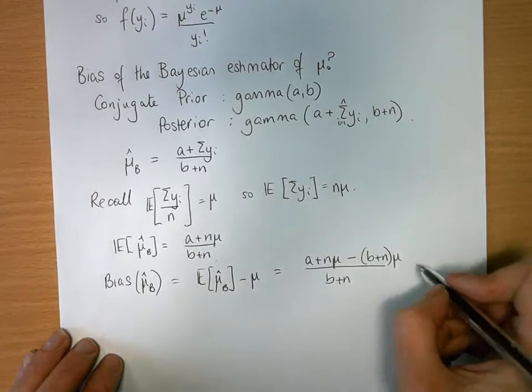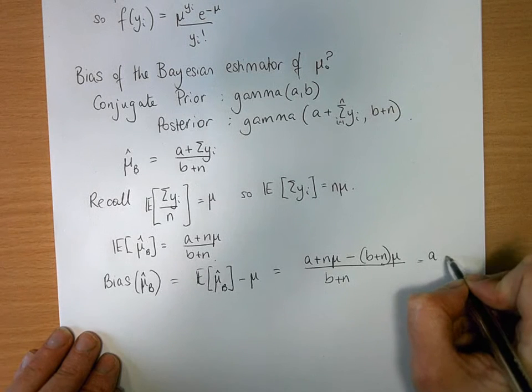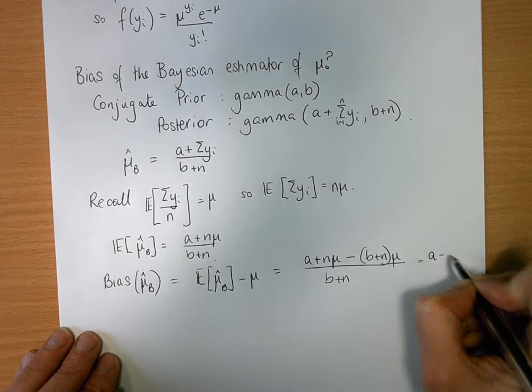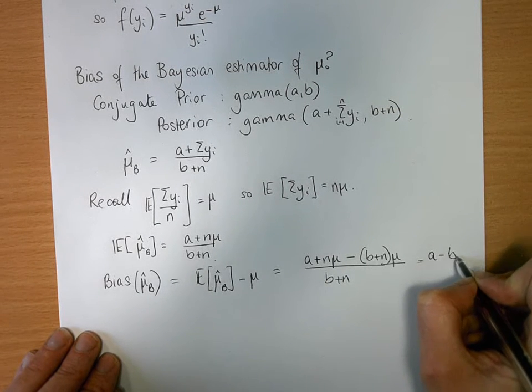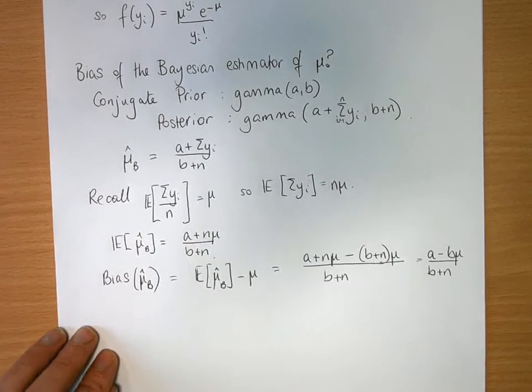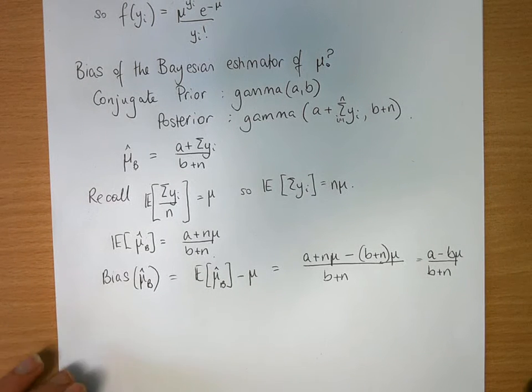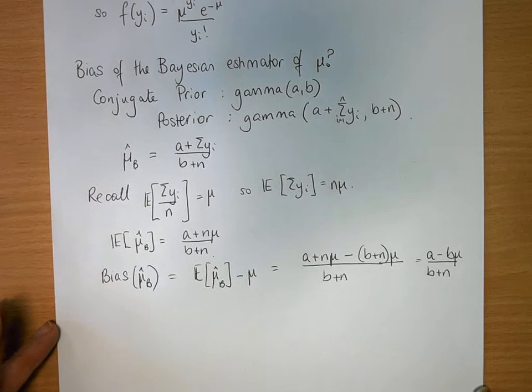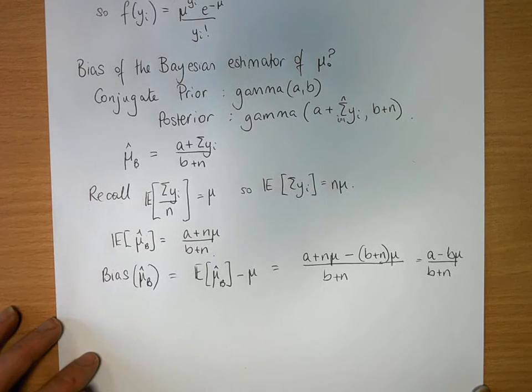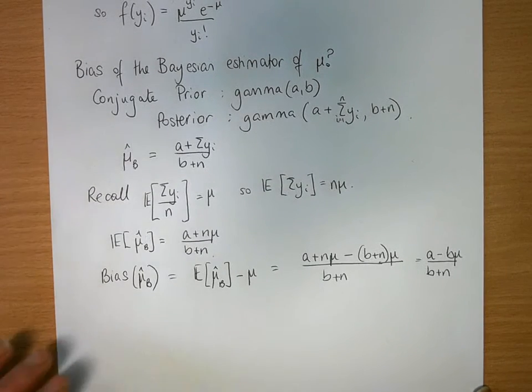Which of course can be simplified to a minus b mu over b plus n. So that's your bias of your Bayesian estimator of the mean of a Poisson distribution, when you have a Poisson distribution but you've used a conjugate prior.